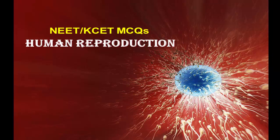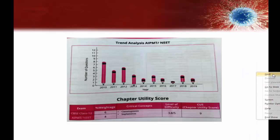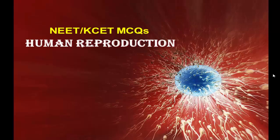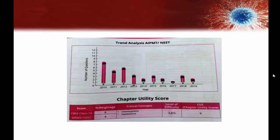Hello dear students, welcome to online biology CET class for NEET and Karnataka CET. In this video I am going to discuss multiple choice questions from the topic human reproduction. The trend analysis shows a chapter-wise utility score of 9, difficulty level 3.8 to 5 percent, with critical concepts usually asked from gametogenesis and implantation. The topic weightage is 6 in CBSE and 4 for NEET.